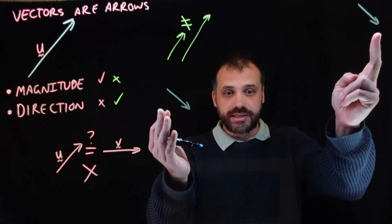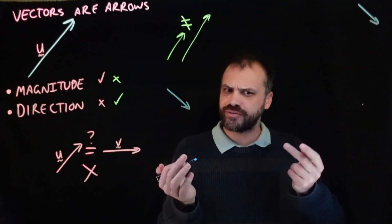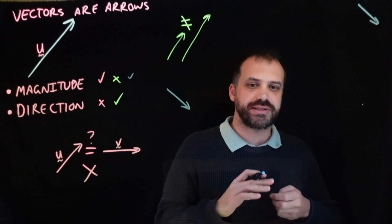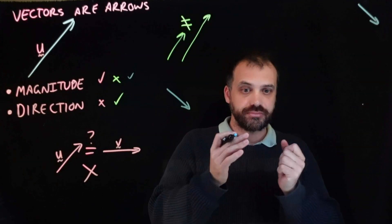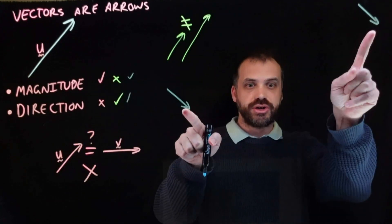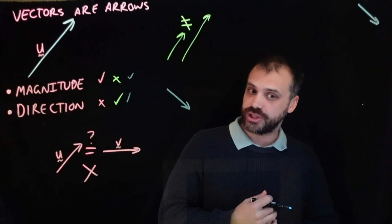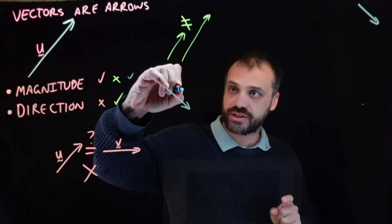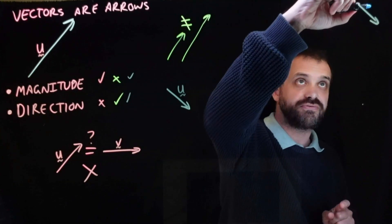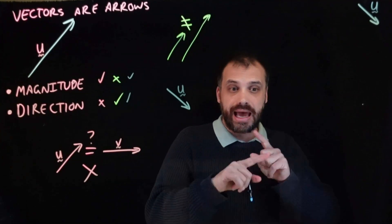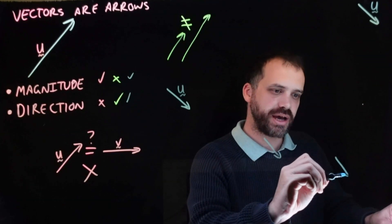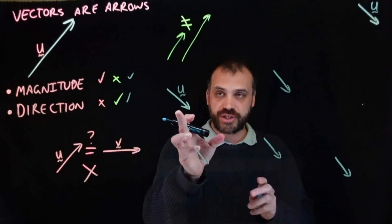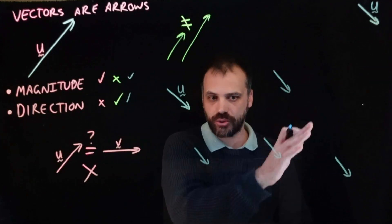Final one. Are these vectors equal to each other? I've drawn them very far apart. Well, they're the same length — so yes, their magnitudes are the same. And their directions are the same. So these vectors are equal to each other. And not only are they equal to each other, they are each other. If this is vector U, this is vector U. We can draw vector U all over our page and they are all the same vector.